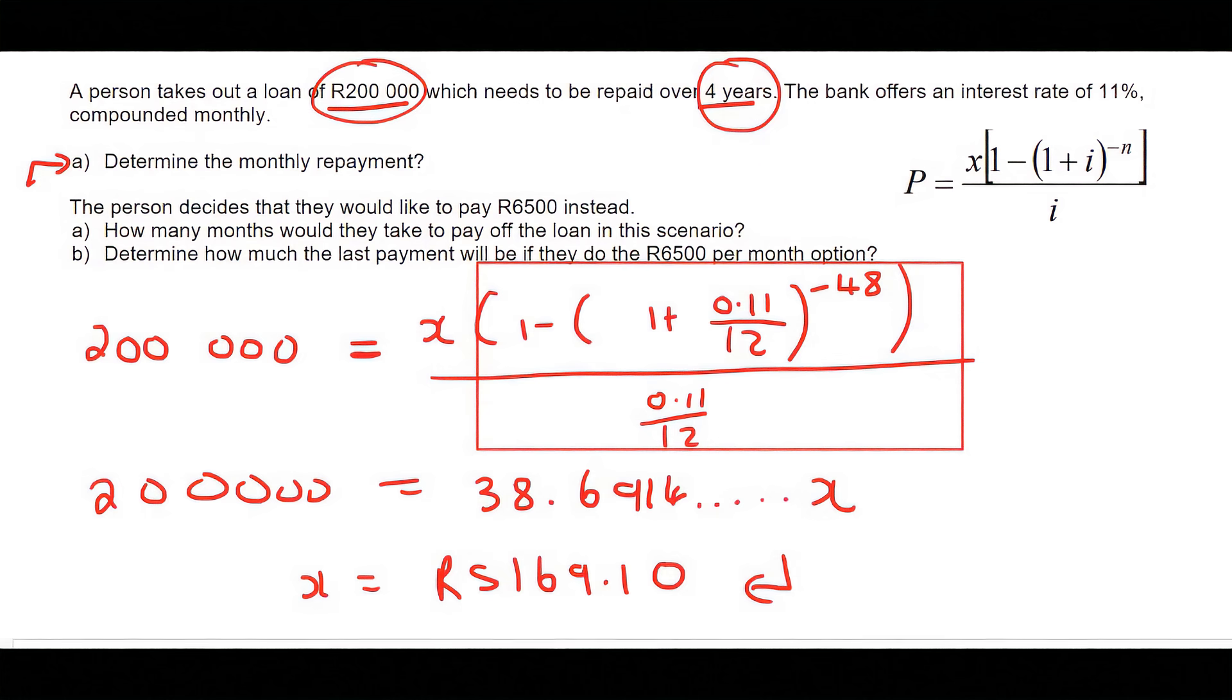However, this person is a bit of an eager beaver and tells the bank they would like to rather spend 6,500 Rand per month. Why would someone do this? It actually makes a lot of sense in real life. The faster you can pay back, the faster you'll pay back your loan, and you'll save money because you'll pay back less interest. The longer you take, the less you spend each month, but it ends up costing you more interest.